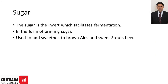The next ingredient is sugar. Sugar is not actually a direct ingredient, but it forms a major part of the beer making process because the barley being used will serve as a sugar source. The starch in the barley will be converted to sugar, and then the sugar acts as an ingredient. Sugar in the form of invert or priming sugar facilitates fermentation, and is also used to add sweetness to brown ales and sweet stout beer.